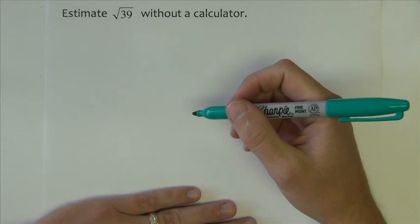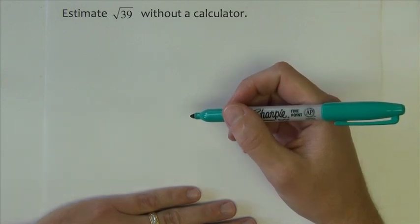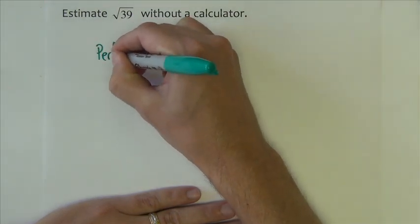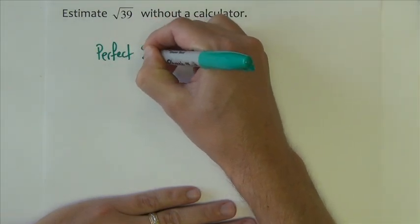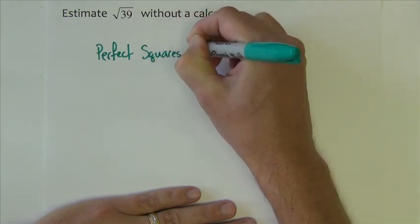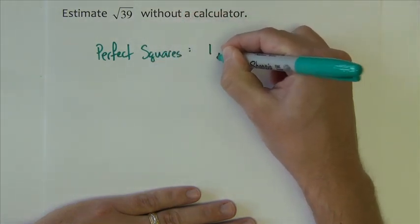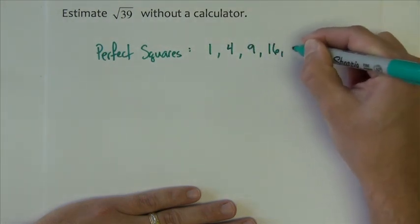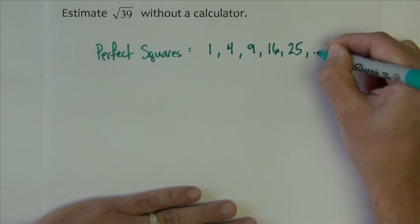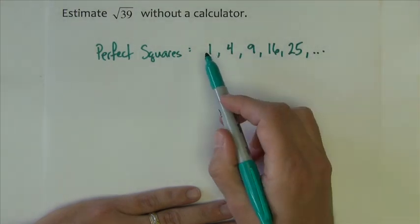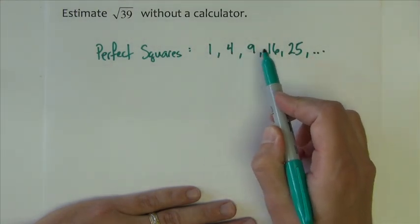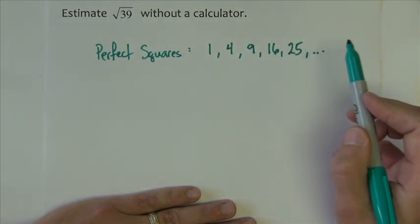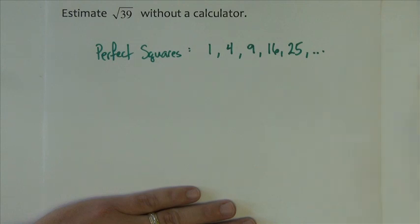When estimating a square root without a calculator, it's important to have a knowledge of what the perfect squares are. Perfect squares are numbers 1, 4, 9, 16, 25, etc. It's 1 to the 2nd power, 2 to the 2nd, 3 to the 2nd, 4 to the 2nd, 5 to the 2nd power, and then on 6 to the 2nd, 7 squared, 8 squared, 9 squared, etc.